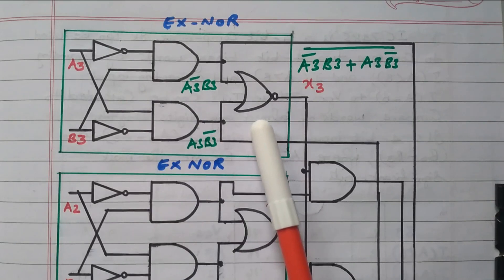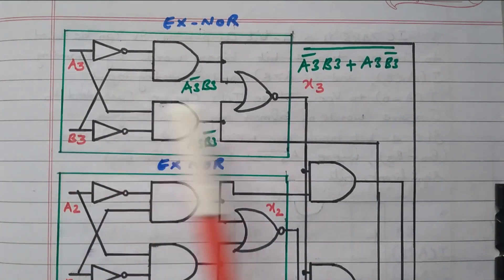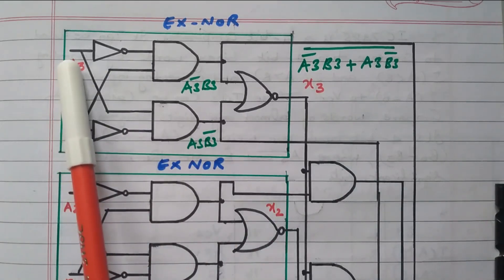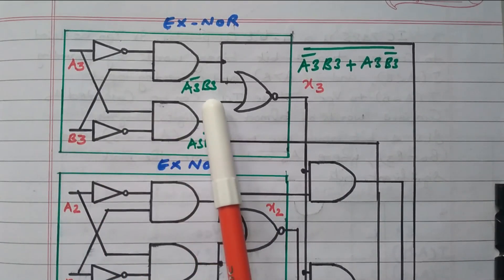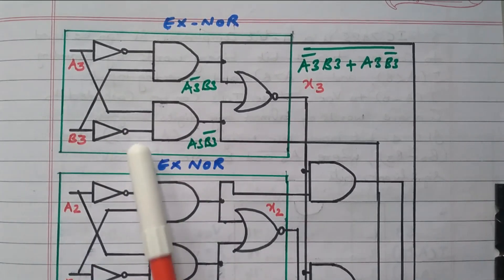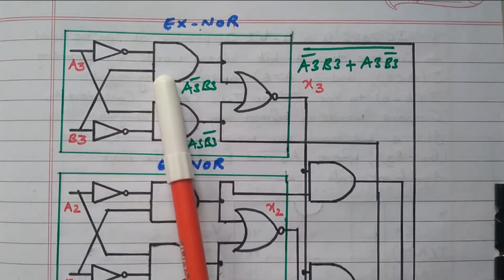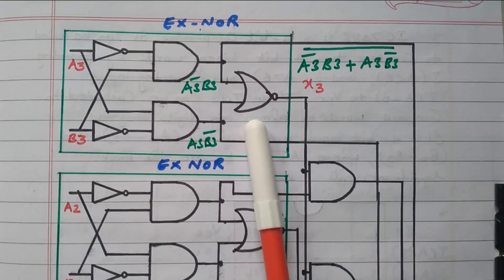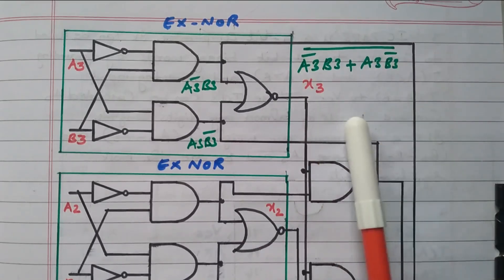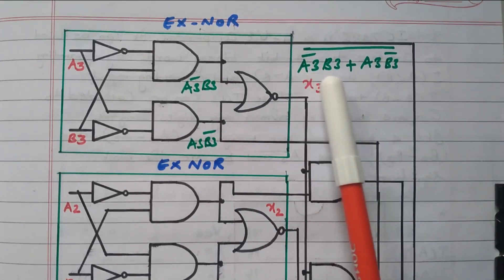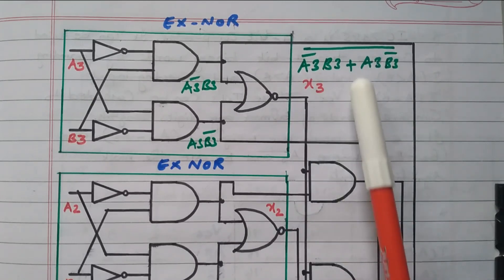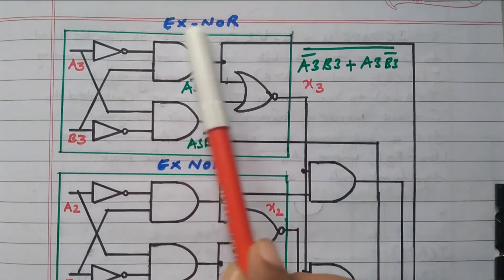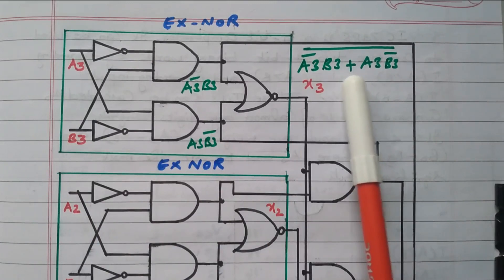The two AND gate outputs are fed into a NOR gate. The NOR gate adds both and takes the complement: (A3'·B3 + A3·B3') whole bar. This is equivalent to the XNOR gate. At this circuit point, X3 is available, along with A3'·B3 and A3·B3', which are needed for checking A less than B and A greater than B.